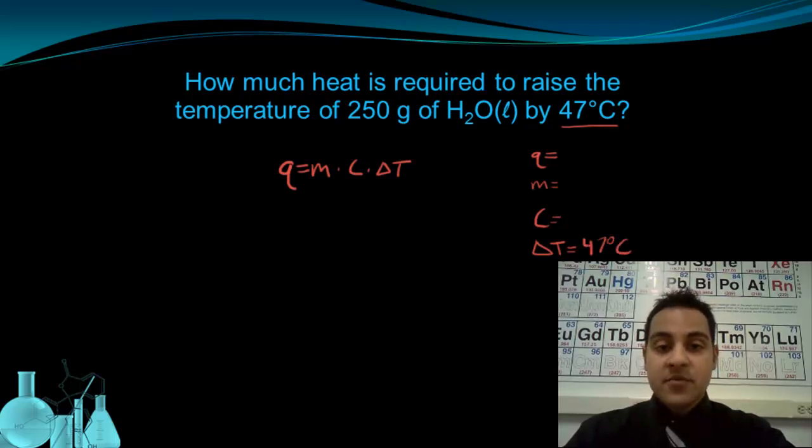It also tells us that we need to raise the temperature of 250 grams of water, so that's going to be our mass, 250 grams. And the question is asking how much heat. So heat's going to remain our variable. That leaves this term C, and C is a specific heat capacity of the substance.